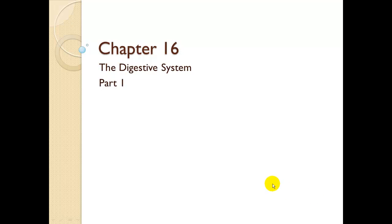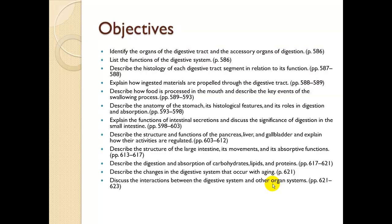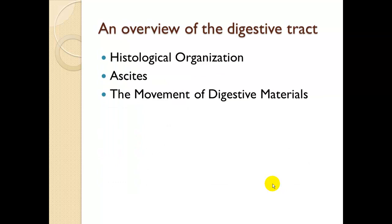This is Chapter 16, The Digestive System, Part 1. We're going to do a quick overview of the digestive tract in this section. We're going to talk about histological organization, which is tissue organization, ascites, and the movement of digestive materials.